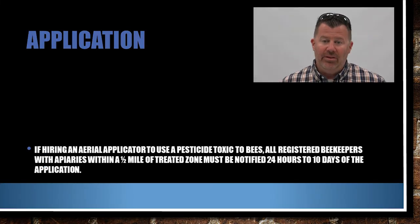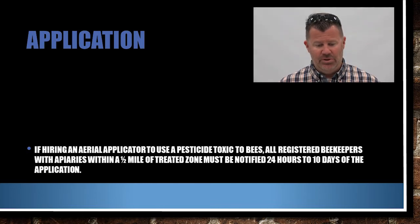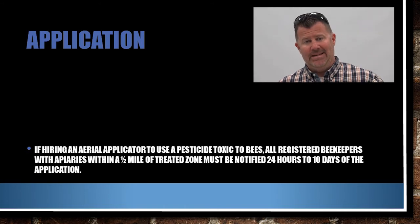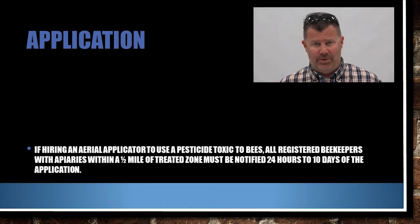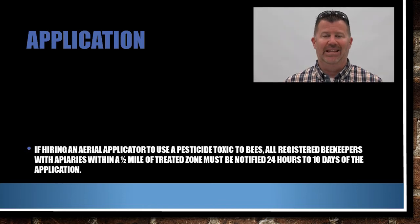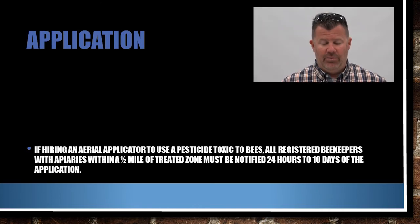If you're hiring an aerial applicator to use a pesticide toxic to bees, you must notify all beekeepers within a half-mile radius of the application site. Notification must be given between one day and ten days before the application — at least 24 hours' notice, and no more than 10 days in advance.